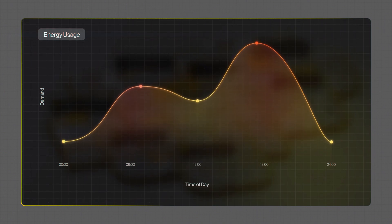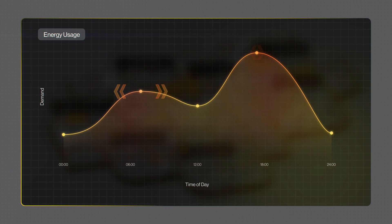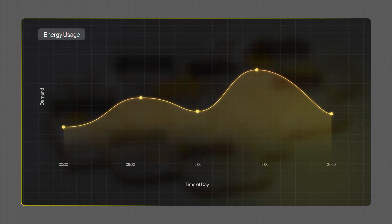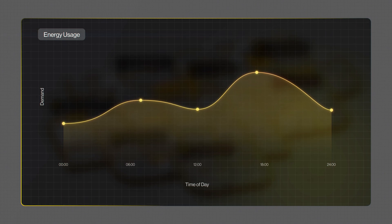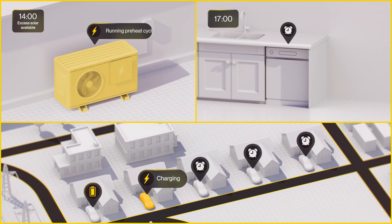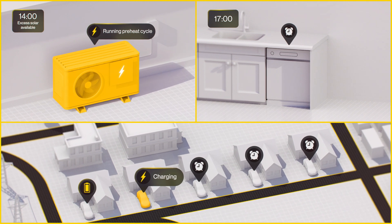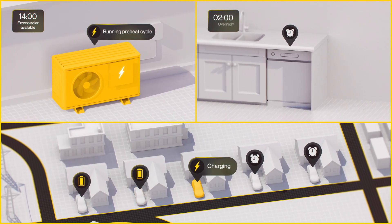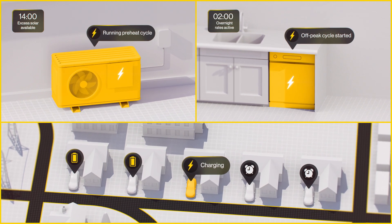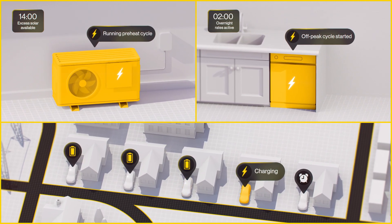A big part of what smart grids will do is spread demand more evenly, shifting certain tasks to times when electricity is more available. So this could mean a heat pump running briefly in the afternoon when solar is most abundant, a dishwasher that waits for low-cost overnight rates before running a cycle or electric vehicles that charge in coordinated waves.